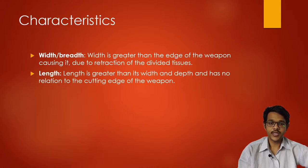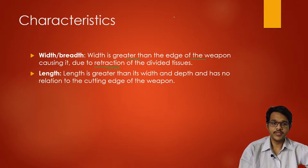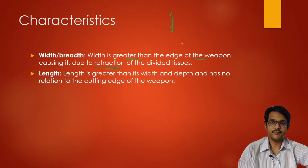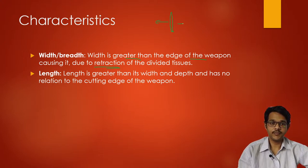The width of the incised wound is greater than the edge of the weapon, because of retraction of the divided tissue. Whenever there is an incised wound, the width will be more compared to the width of the weapon — for example, if a knife is used, because of gaping of the injury, the width increases.